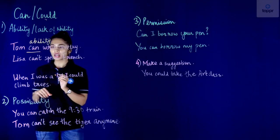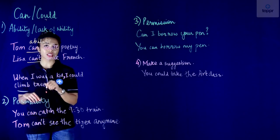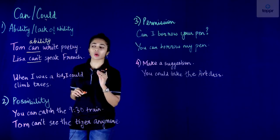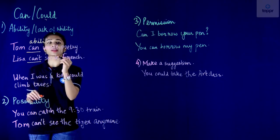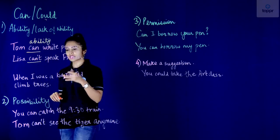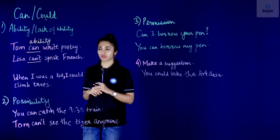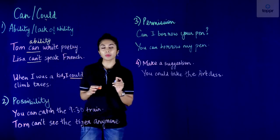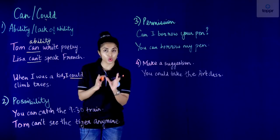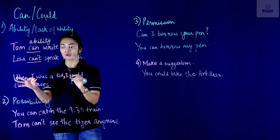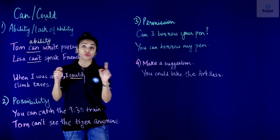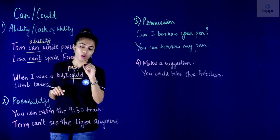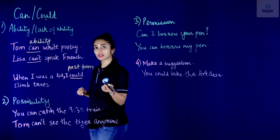The second sentence: 'Lisa can't speak French.' Our modal is 'can't', meaning cannot. Here we are talking about Lisa's inability, her lack of ability to speak French. The third sentence: 'When I was a kid, I could climb trees.' Here we have used 'could' and not 'can' because when we talk about ability or lack of ability in the past, we use 'could' instead of 'can'. In the past form, we use 'could' to express ability or lack of ability.